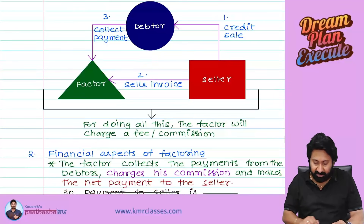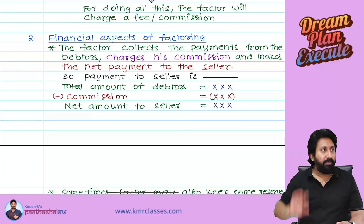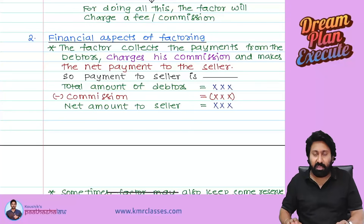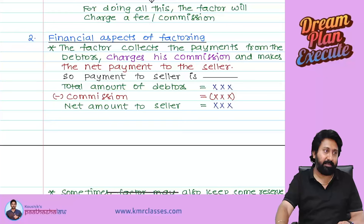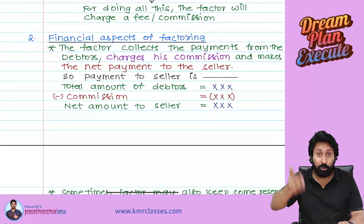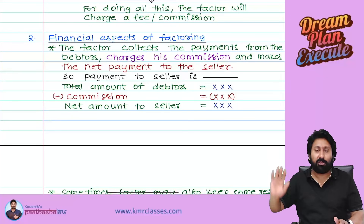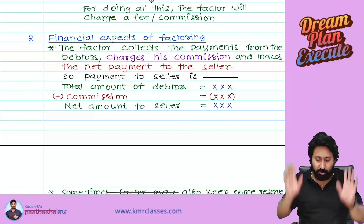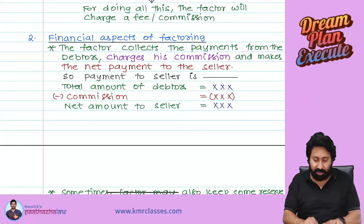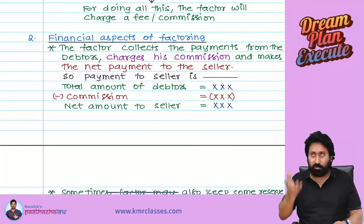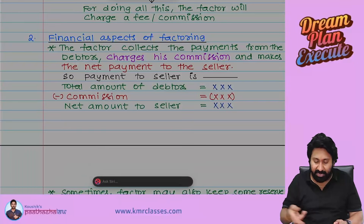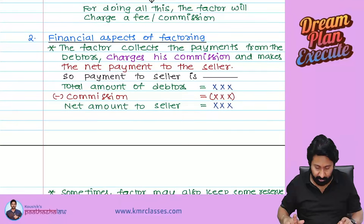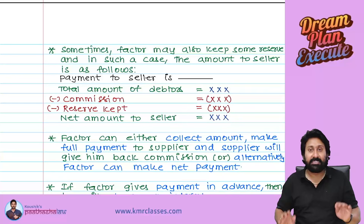For doing all this, the factor will charge a fee or commission — obviously nobody works for free. The key financial aspects to keep in mind: Schedule 1 — Net amount to the seller = Total amount of debtors minus commission charged by the factor. The balance is the net amount to the seller.